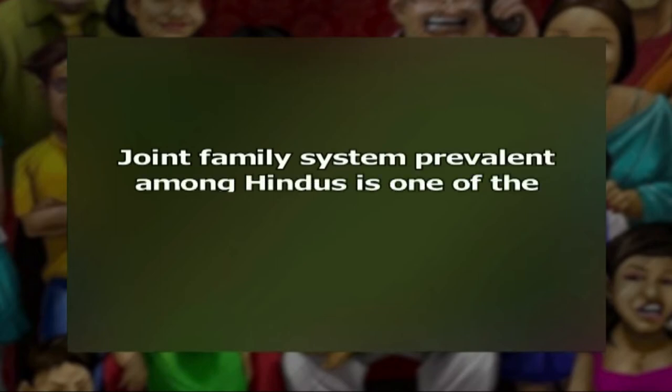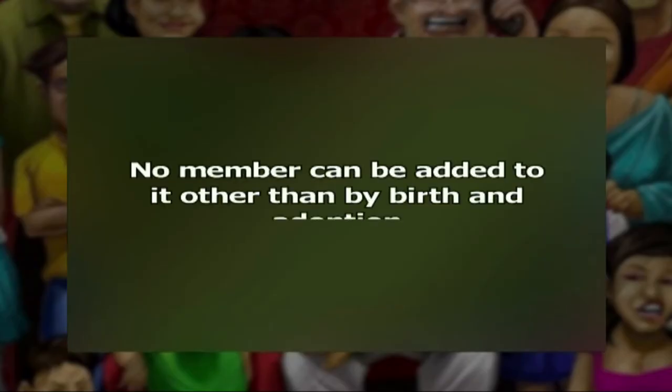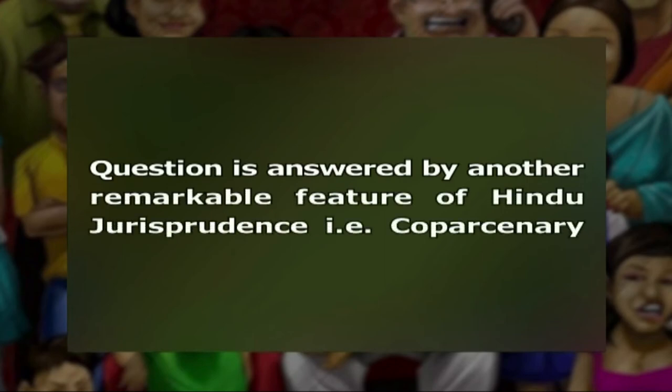The joint family system prevalent among Hindus is one of the distinguished features of Hindu jurisprudence. A Hindu joint family consists of a common ancestor, his wife, all his lineal descendants, their wives and children including unmarried daughters. No member can be added to it other than by birth and adoption. Once it is established that a Hindu joint family has joint property, the question which arises is who among the joint family members shall have exclusive right over the joint property and when and how they can demand their shares from it. The answer lies in co-parsenery.